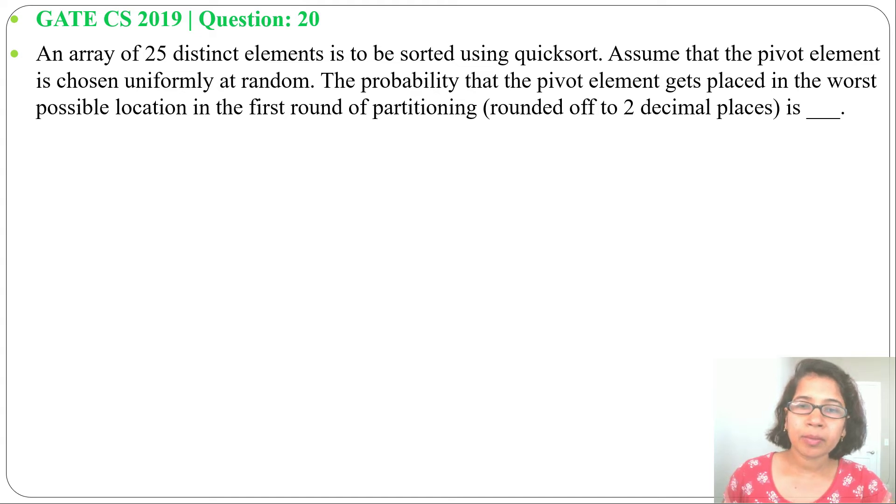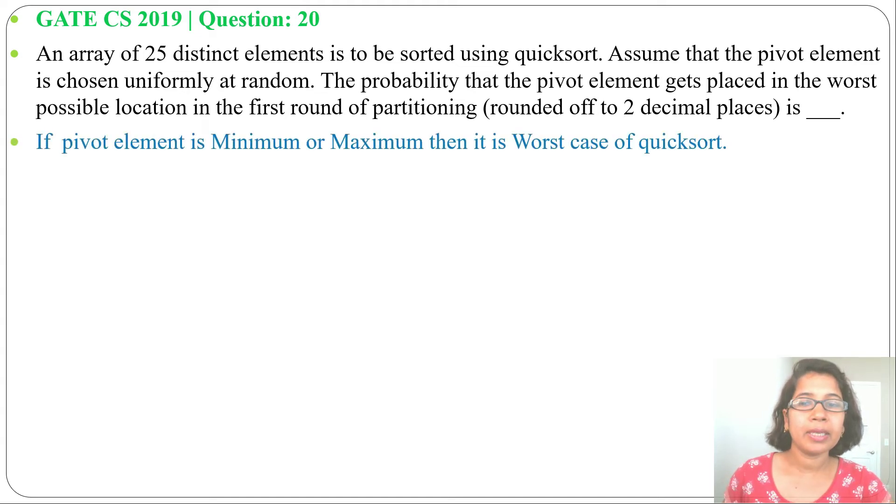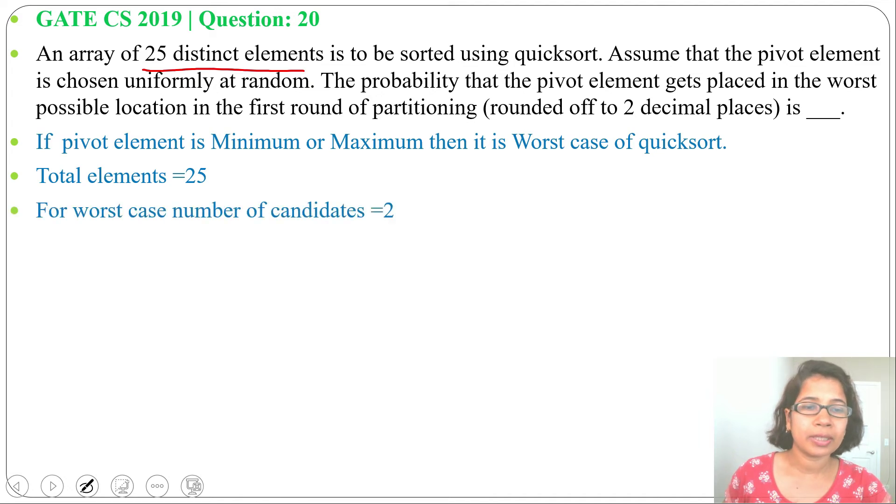Whenever we are choosing maximum element or minimum element, that is the worst case for quicksort. There are total 25 distinct elements, and in 25 distinct elements, two such elements for worst case are maximum and minimum. Means there are just two elements which if you choose as pivot, then that will be our worst case.